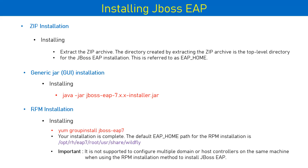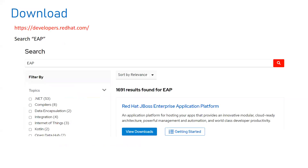The third option is the RPM installation. You get an RPM file from Red Hat, and to install it you log in as root and run 'yum groupinstall' with the name of your RPM file. An important point from the Red Hat documentation: it is not supported to configure multiple domain or host controllers on the same machine when using the RPM installation.